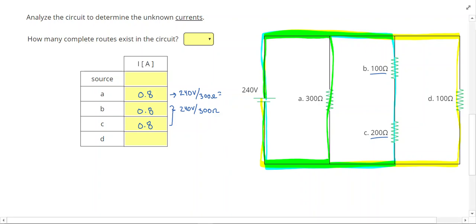To calculate for resistor D, we can do 240 volts divided by 100 Ohms and that gives us 2.4 Amps.